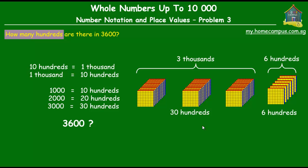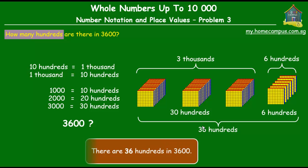The six hundreds are just six hundreds. So altogether, if we have three thousand six hundred, we have thirty hundreds plus six hundreds, which equals thirty-six hundreds. There are thirty-six hundreds in three thousand and six hundred.